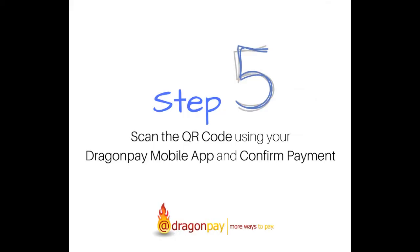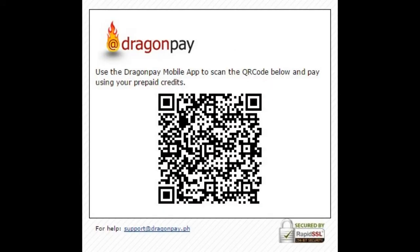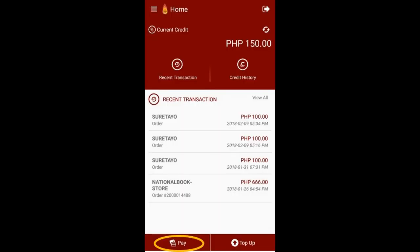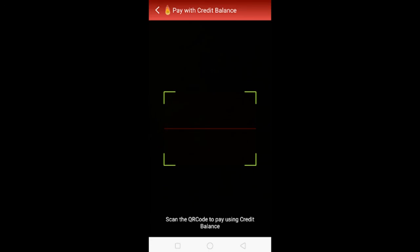Step 5. Scan the QR code using your Dragon Pay mobile app and confirm payment. A QR code will appear on screen. Open your Dragon Pay mobile app and click the Pay button at the lower left corner. Your mobile device's camera will get activated.